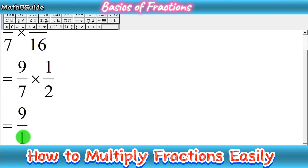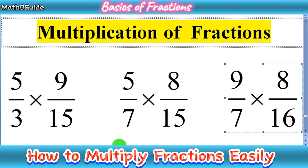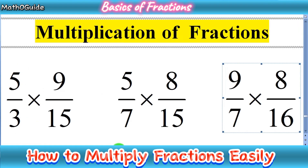Now multiply: 9 times 1 gives 9 in the numerator, and 7 times 2 gives 14 in the denominator. So 9 over 14 is our final answer. I hope you got the basic idea of how to multiply fractions — check for common factors above and below the bar, cancel them out, then simply multiply. Thanks for watching and don't forget to subscribe!